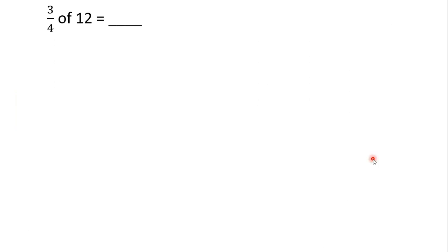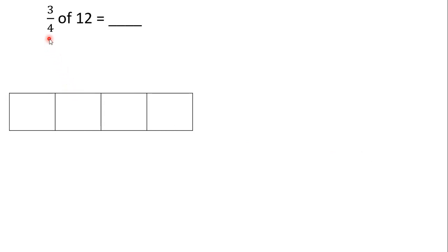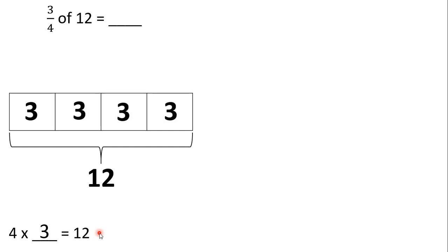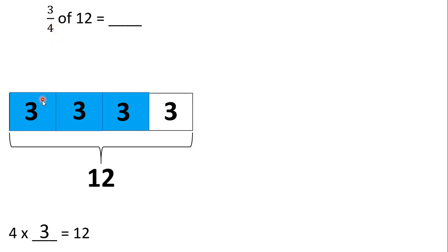Here we have 3 fourths of 12. So we're going to create a tape diagram broken up into four equal parts since the denominator is 4. The entire tape diagram is worth 12 since we're finding a portion of 12. Now we need to figure out what each part represents. We need to repeatedly add the same number four times to get to 12, and we know repeated addition is the same as multiplication. So here we have four parts times something equals 12. We know 4 times 3 equals 12, so each of these parts is going to be worth 3. That's 3, 6, 9, 12. Now we only want to know three of the four parts, so let's highlight three of those parts. We can see that 3 fourths of this entire number would be 3, 6, 9. So 3 fourths of 12 is 9.